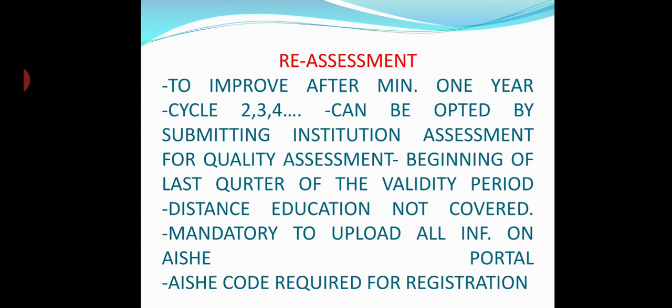What is reassessment? There are two terms — one is reassessment and one is re-accreditation. Re-assessment is when the institution is not satisfied by the NAAC grading. Re-accreditation is for going to the next cycle of assessment. So after cycle 1, that is the first time NAAC assessment and accreditation is done, the institution goes for cycle 2, cycle 3 and so on. And if after grading the institution has some questions or some appeal, then the institution goes for reassessment after one year. It is mandatory that IQAC code and IQAC data is uploaded on the NAAC portal.